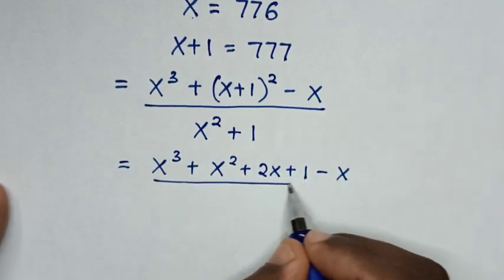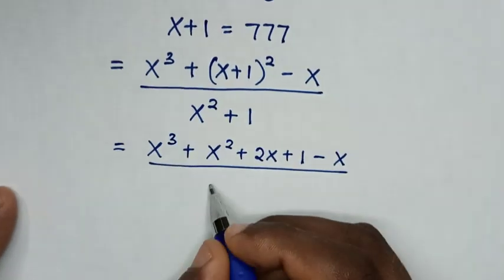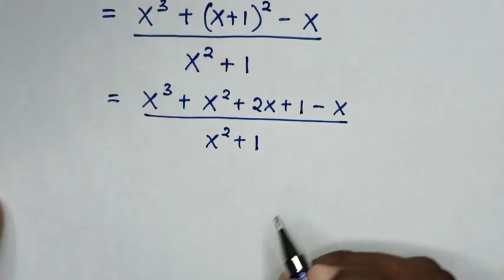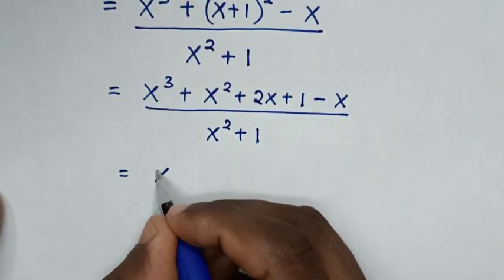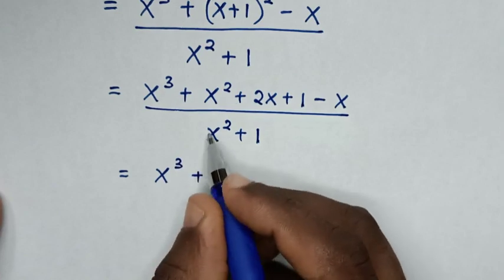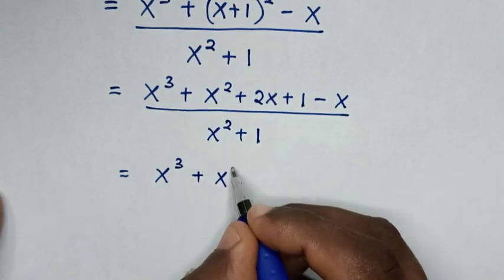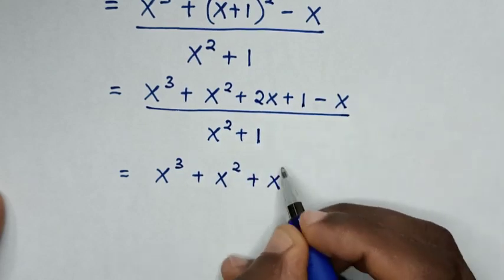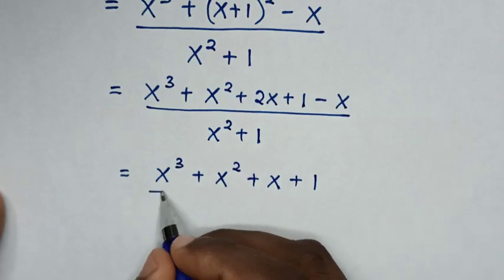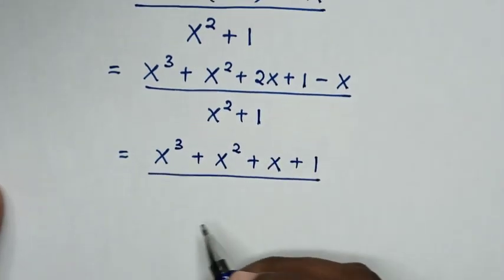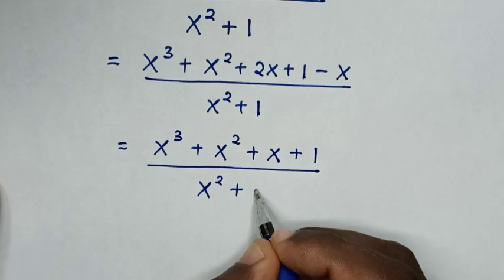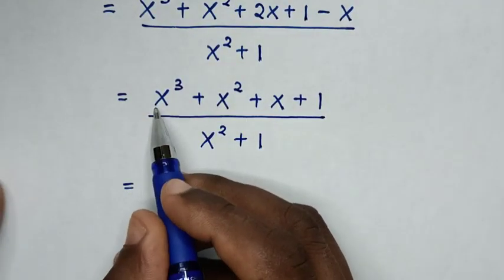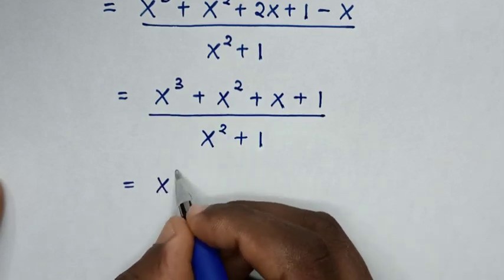Over x squared plus 1. In the next step it will be equal to x cubed, then plus x squared, then 2x minus x is x, so plus x, then plus 1, over x squared plus 1. In the next step, x squared is common.